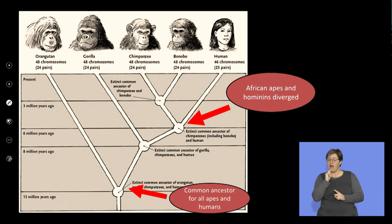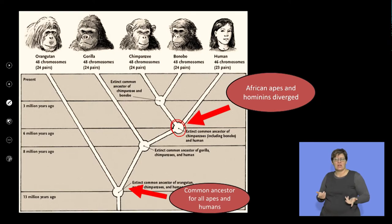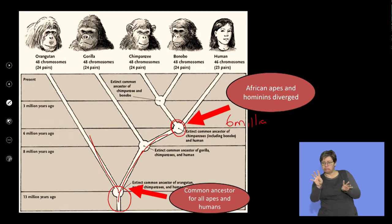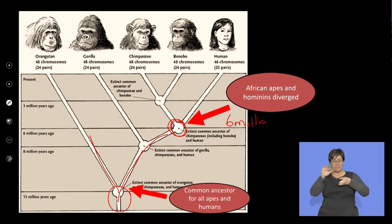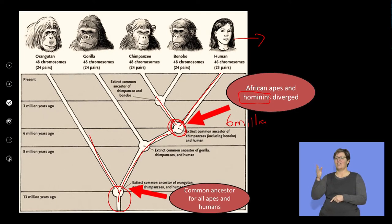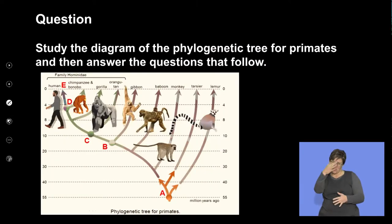Let's put a time frame on this phylogenetic tree. Round about six million years ago, this is the key moment. We had a common ancestor — you can see it on the phylogenetic tree. This is the common ancestor of all the hominids and great apes. But around six million years ago, the Hominins — us and our ancestors — split from the broader hominid group. This is now finally going to lead us to what we are: Homo sapiens. Let's look at a diagram of a phylogenetic tree and answer some questions.